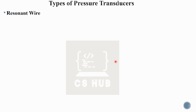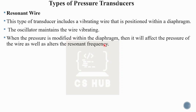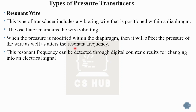The resonant wire transducer uses a vibrating wire placed within a diaphragm. An oscillator maintains the wire at resonance. When the pressure changes, it affects the tension of the wire and alters the resonant frequency. This resonant frequency can be detected through a digital counter circuit and converted into an electrical signal. Normally the wire vibrates at one particular frequency, and when pressure changes, the resonant frequency changes, which is then measured and converted to an electrical output.